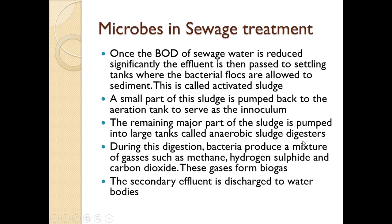These large tanks are called anaerobic sludge digesters. When this sludge is digested, other kinds of bacteria that grow anaerobically — anaerobic bacteria — digest the bacteria and fungi present in the sludge. Anaerobic means they do not require oxygen.